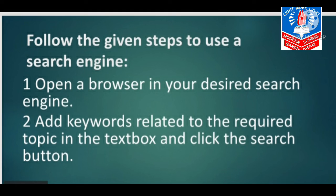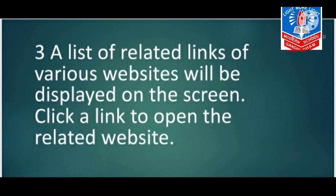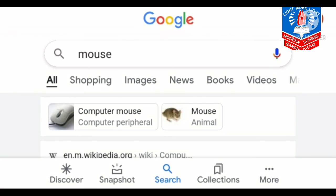Following are the steps to use a search engine: First, open the browser and go to your desired search engine like Google. Second, add keywords related to the required topic in the text box and click the search button. Third, a list of related links from various websites will be displayed on the screen — click any link to open the related website. For example, searching the word 'mouse' shows many websites including shopping, images, news, and books.